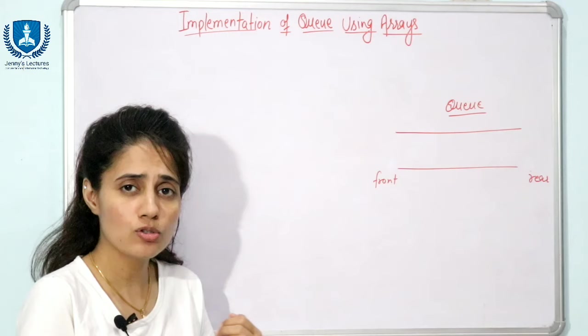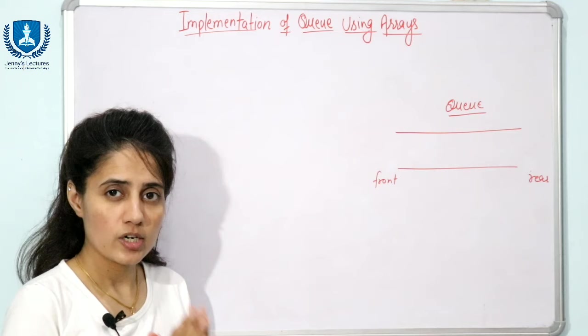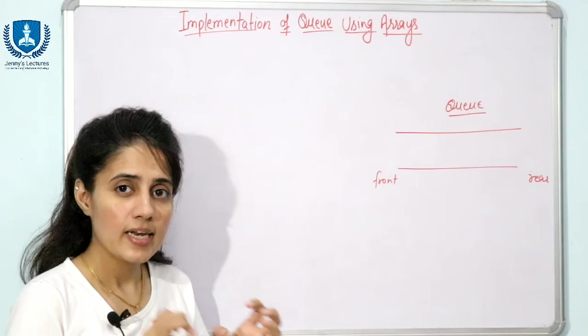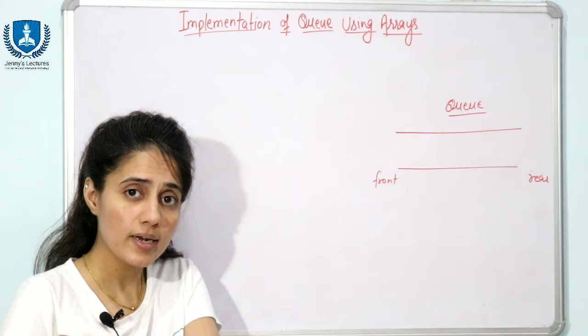In this video, we will see how you can implement a queue using arrays. Before going to the implementation part, you must check out the previous video. Queue is a collection — or you can say a list — where insertion is possible from one end called the rear, and deletion is possible from the other end called the front.